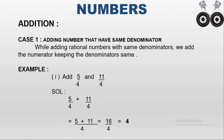For example, if I want to add 5/4 and 11/4, these 2 rational numbers have the same denominator, so we can add the numerators. The numerators are 5 and 11, so we add: (5 + 11) / 4. 5 plus 11 is 16, giving us 16/4.